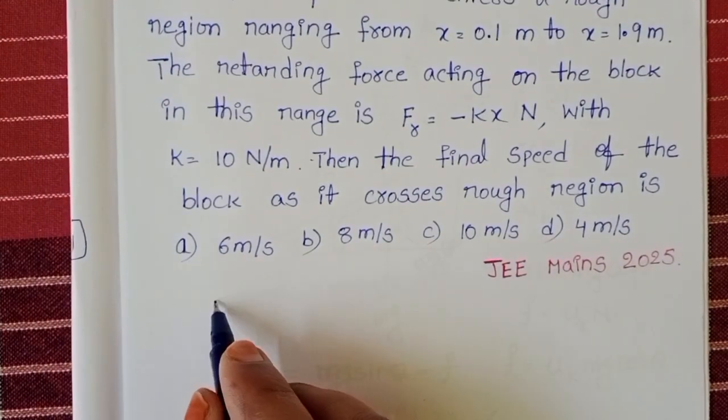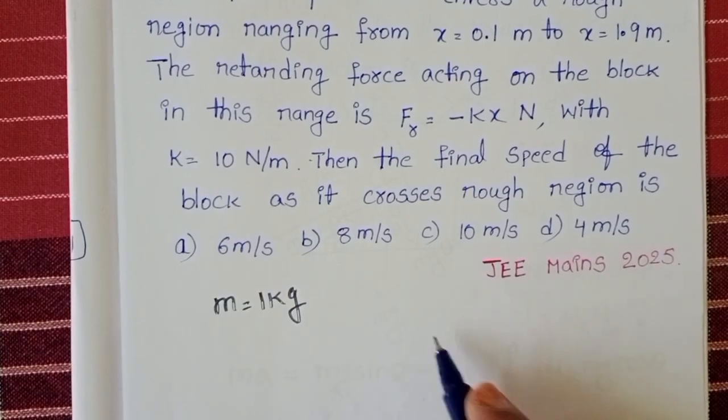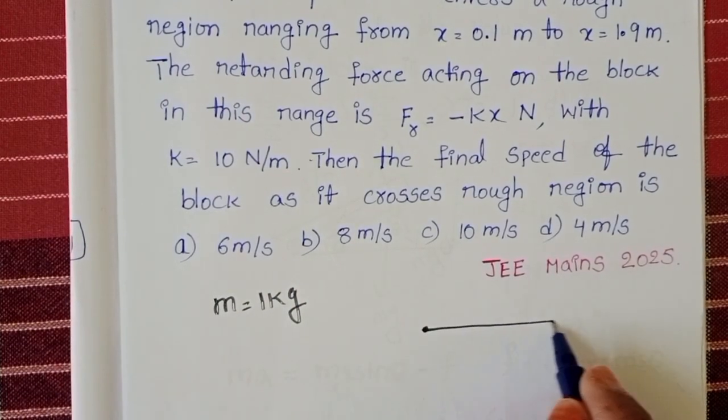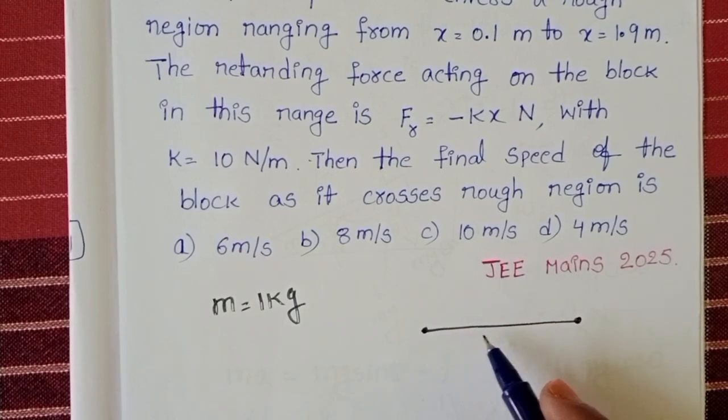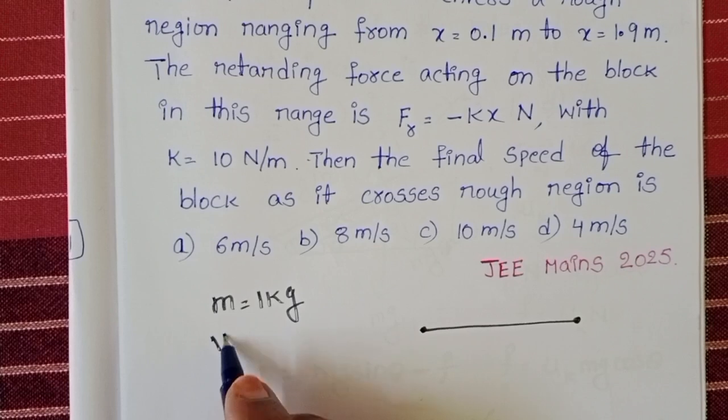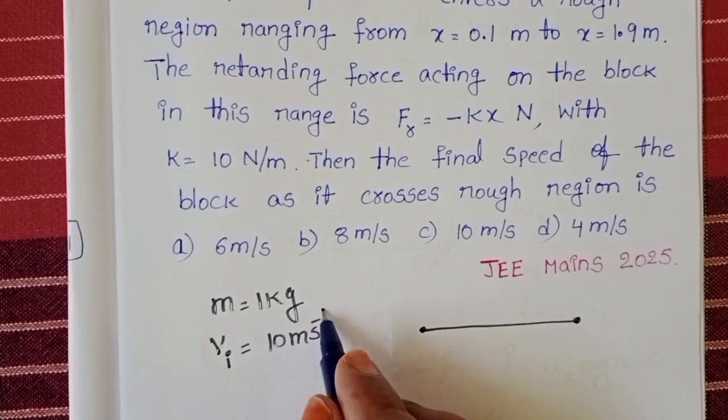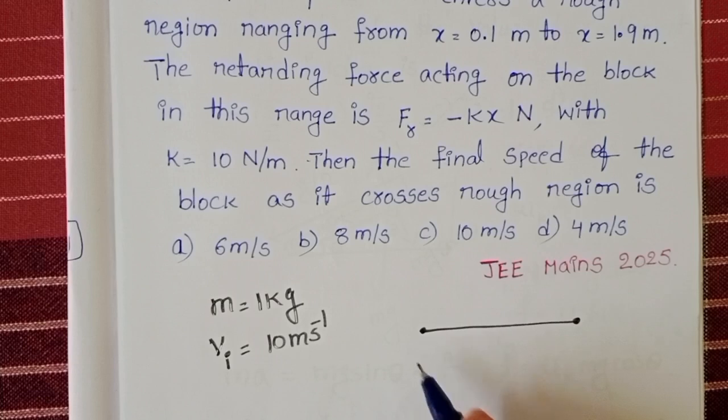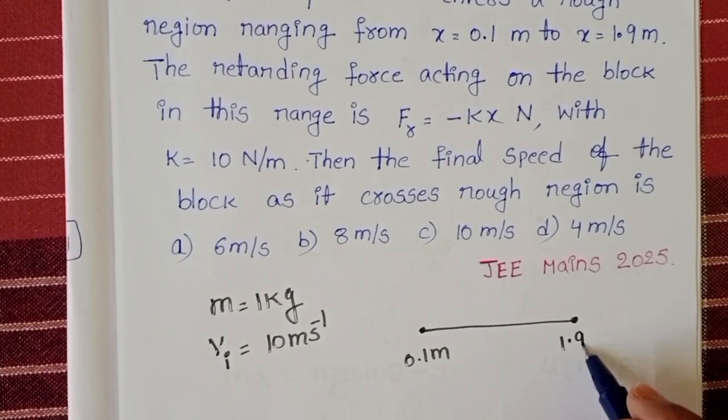In this question, mass of the block is 1 kg. It enters into a frictional surface. Initial velocity of the block when it enters into the frictional surface is vi equals 10 meter per second. This frictional surface range is from 0.1 meters to 1.9 meters.